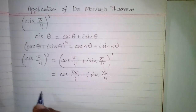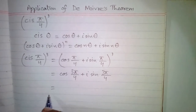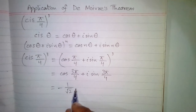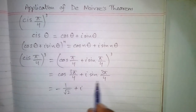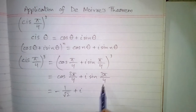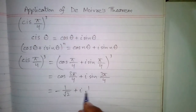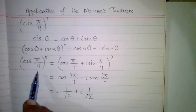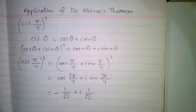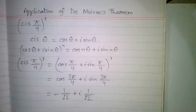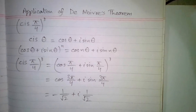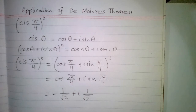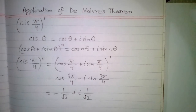Now we find the values: cos(3π/4) is −1/√2 and sin(3π/4) is 1/√2. Therefore, cis(π/4) raised to the power 3 equals −1/√2 plus iota(1/√2). This is an application of De Moivre's theorem.